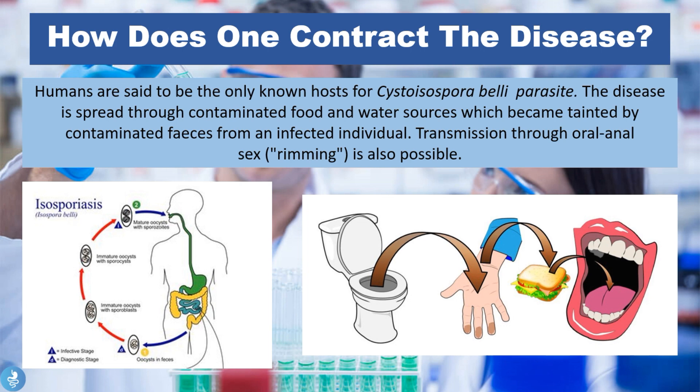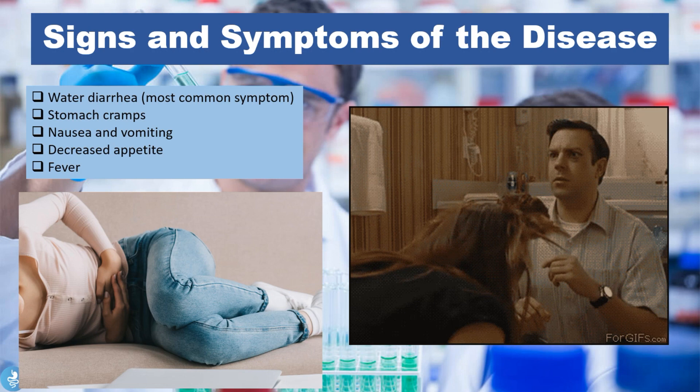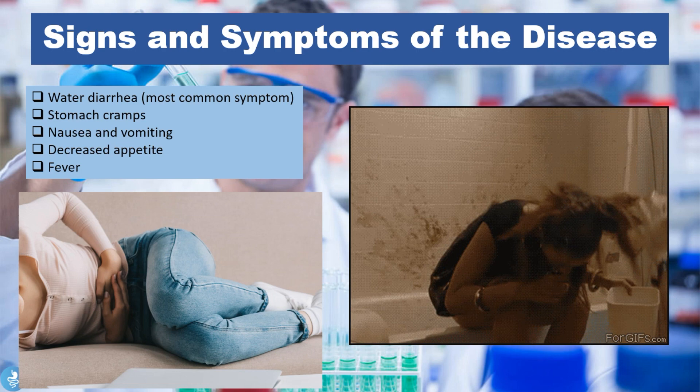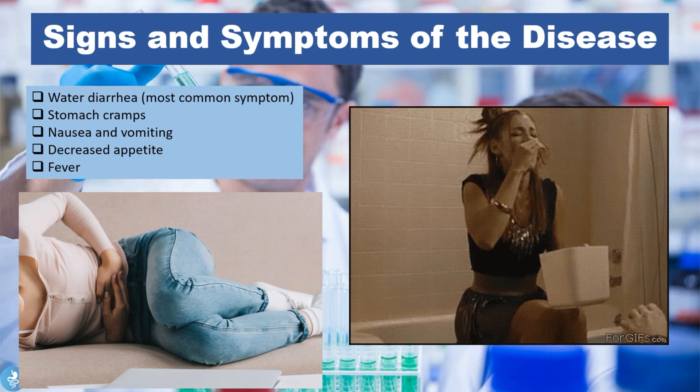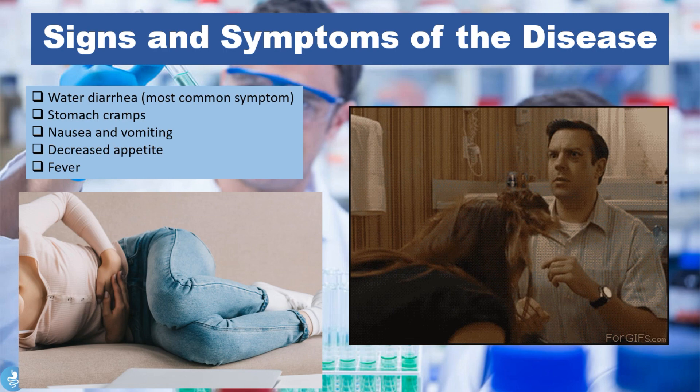Now let's take a closer look at the signs and symptoms of this disease. The signs and symptoms include watery diarrhea, which is actually the most common symptom. The patient will also develop stomach cramps, nausea and vomiting, a decreased appetite, and a fever. The parasite localizes within the GI tract and affects the intestines, which is why all the symptoms relate to the GI tract.